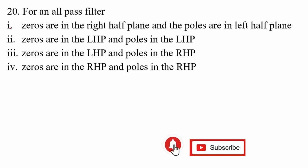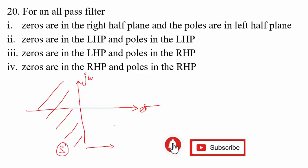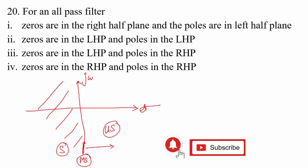Moving on to question 20: for an all-pass filter, where do the zeros and poles lie? Consider the s-plane with σ and jω axes. On the left half of the s-plane, stability is guaranteed. On the right half, the system becomes unstable. On the imaginary axis, the system is marginally stable if poles are non-repeating. Zeros can lie anywhere, but poles must lie only on the left half of the s-plane for stability.